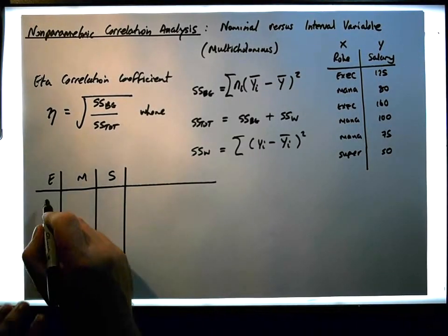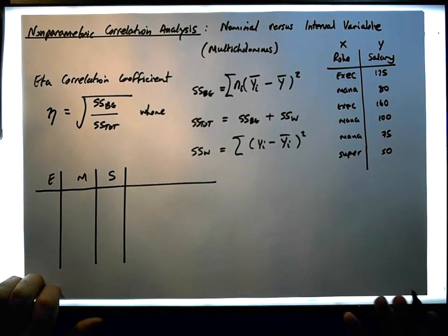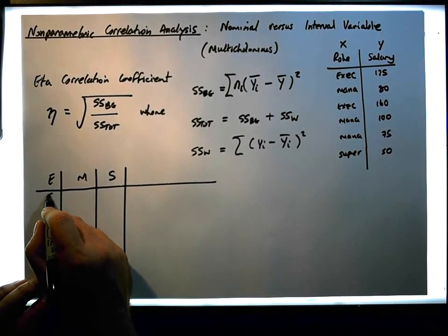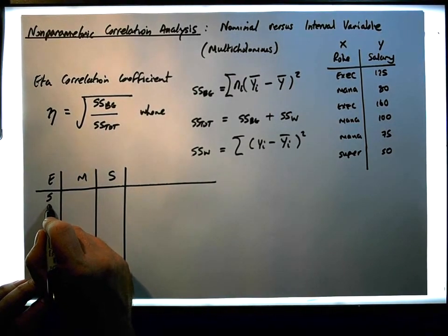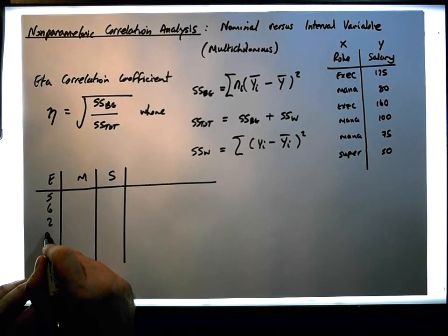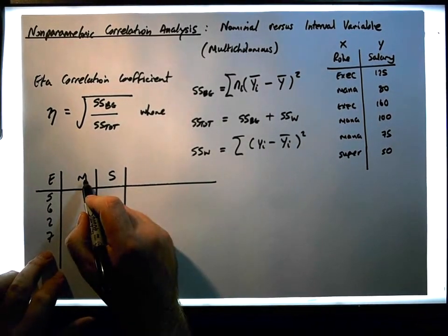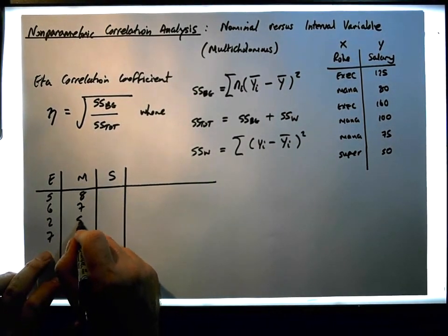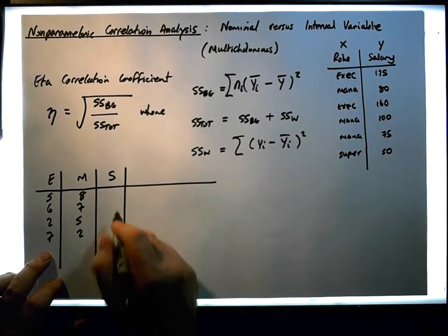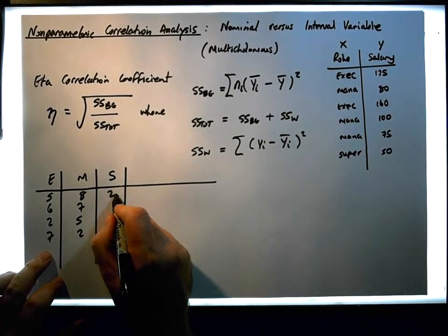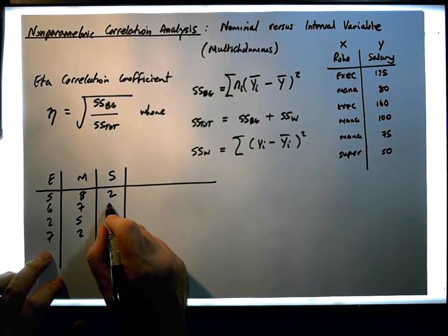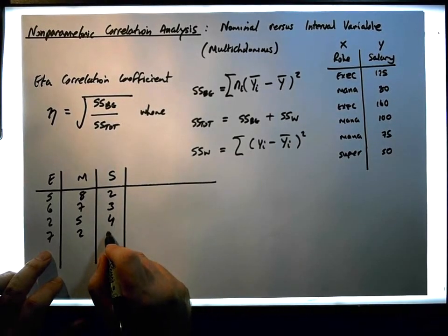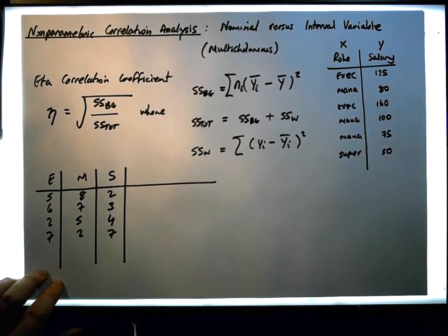The question that was asked was: how much did you spend on lunch? The first executive said €5, followed by €6, followed by €2, followed by €7. The first manager said €8, the second manager €7, €5, and €2. The first supervisor said €2, €3, the third supervisor €4, and the fourth supervisor said €7.